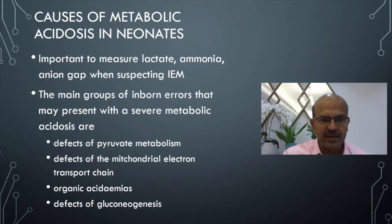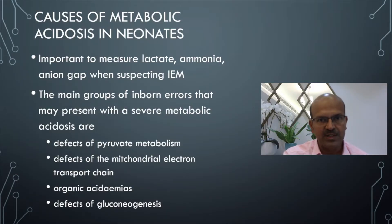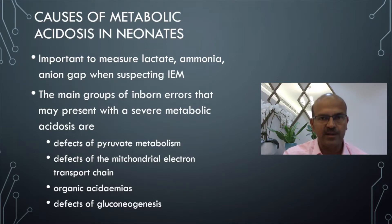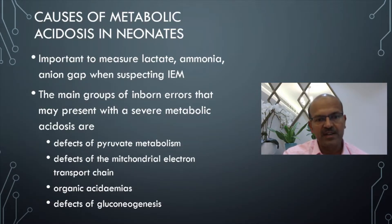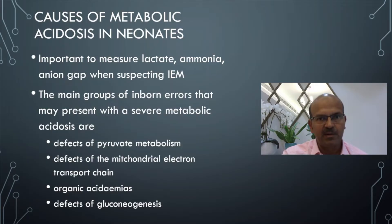The main groups of IEMs presenting with severe metabolic acidosis include defects of pyruvate metabolism, mitochondrial defects, and defects of the mitochondrial electron transport chain. Organic acidemias are part of the newborn screen and usually present by day 3 or 4 with significant acidosis and high ammonia. Maple syrup urine disease, defects of gluconeogenesis, galactose-1-phosphate defects, and pyruvate dehydrogenase complex defects can also present with acidosis. If you suspect an inborn error of metabolism, keep the baby NPO on IV fluids and consult a metabolic consultant.